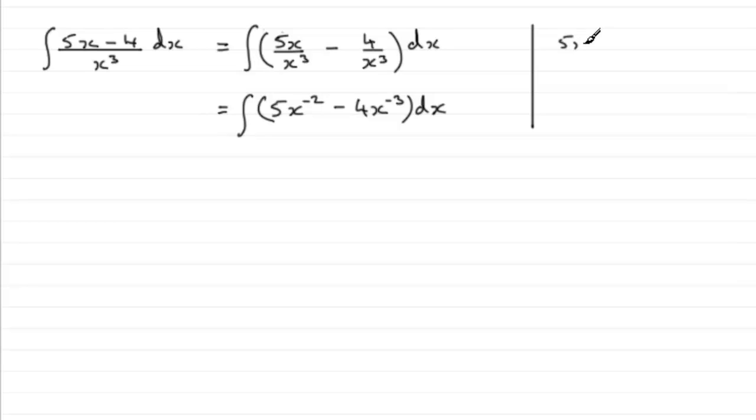you can think of (5x - 4) over x³ as being the same as (5x - 4) being multiplied by 1 over x³, which is the same as x^(-3). So then all you do is you multiply each of the terms in the bracket by x^(-3).